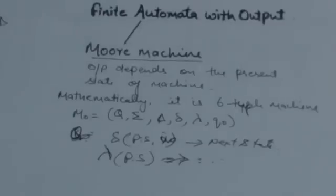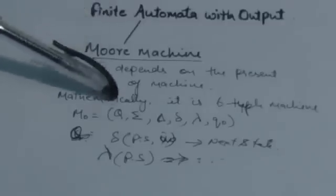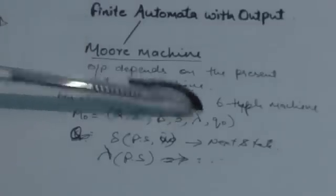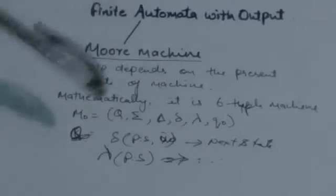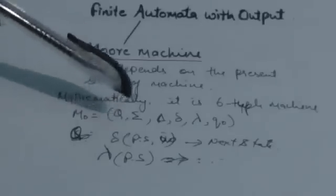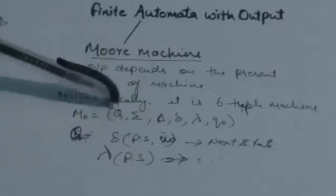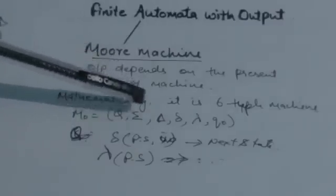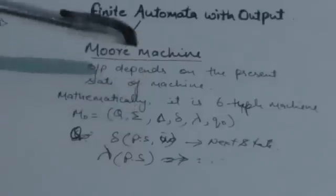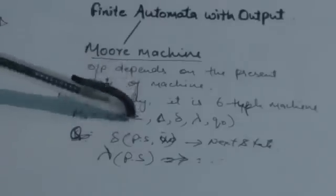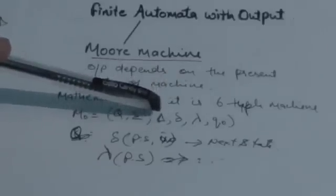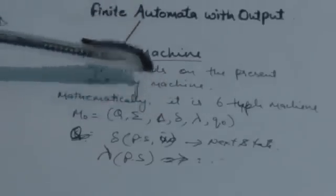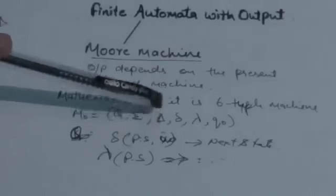Mathematically, a Moore machine is a six-tuple. Suppose there is a Moore machine represented as (Q, Σ, Δ, δ, λ, q0). Here q0 is the initial state of the Moore machine. Capital Q is a finite set of states. Sigma (Σ) is a finite set of input symbols which the Moore machine can read.